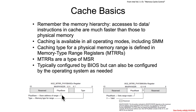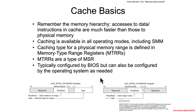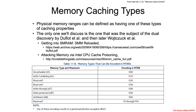It's a special type of MSR that has a form like this. You've got a physical base and you've got a physical mask. The base is going to say what type it is and then it's going to have an address. The mask is used to define the range that it covers. Typically these are going to be configured by the BIOS to allow for a fast startup, but the operating system can configure them as well.